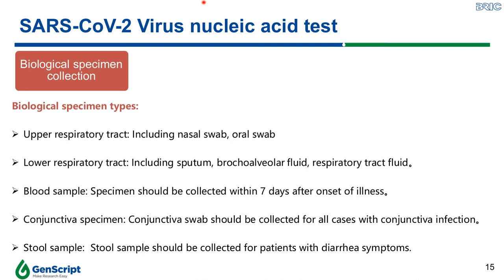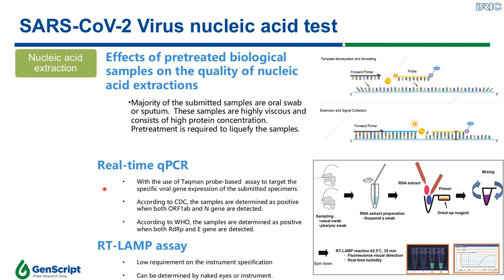This is then followed by nucleic acid extraction. The majority of submitted samples are oral swabs or sputum, which poses challenges for extracting high-quality RNA due to high viscosity and protein concentration. Therefore, these samples need to be liquefied under special treatment such as sonication. After extraction, qPCR is then carried out using the TaqMan probe-based assay, which allows researchers to target specific viral gene expressions of the specimen.